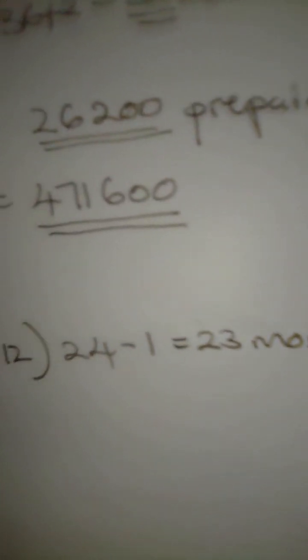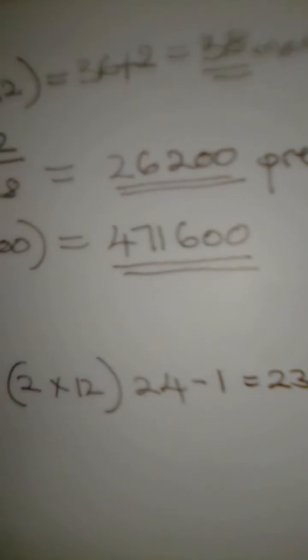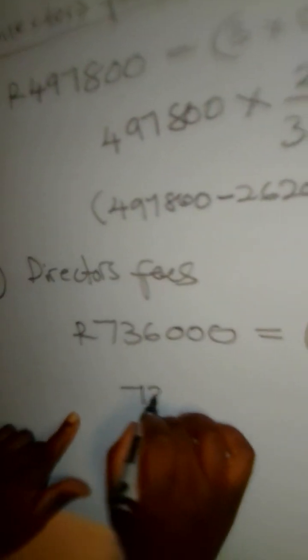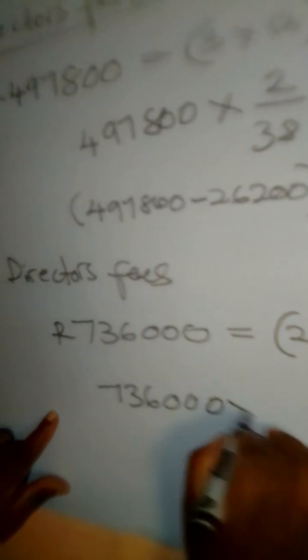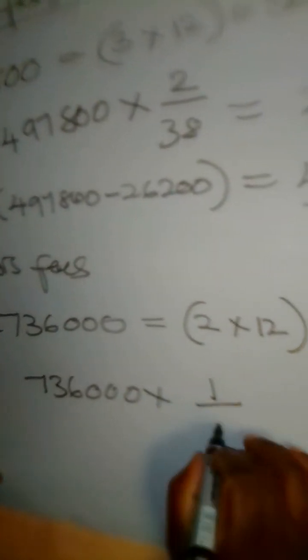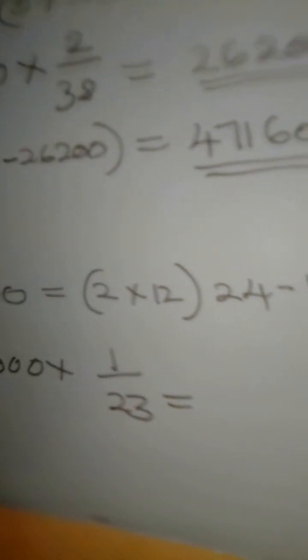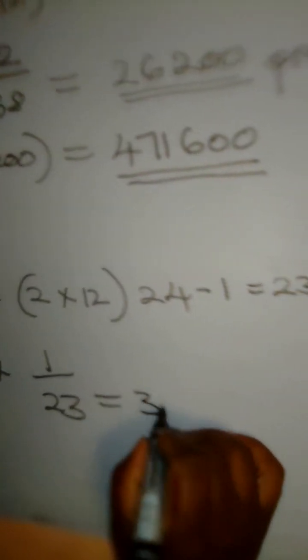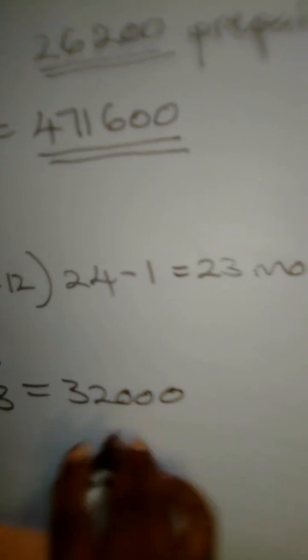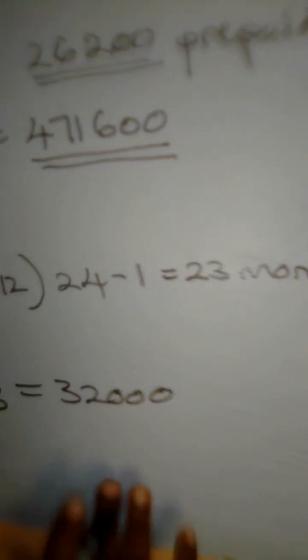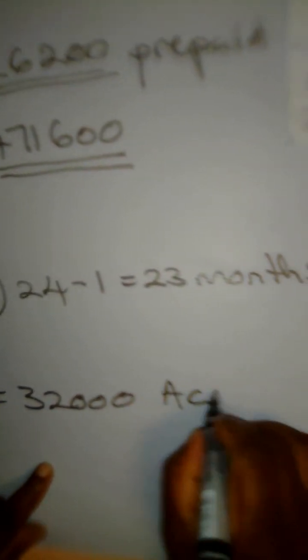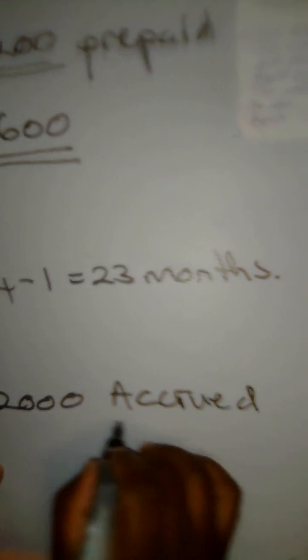So now we want to find out how much is that one month, the accrued expense. We are looking for the accrued expense. We are going to say $736,000 multiply by one over 23. It's going to give us something like $32,000. $32,000 is the money that is accrued, accrued expense. This is our accrued expense, $32,000.